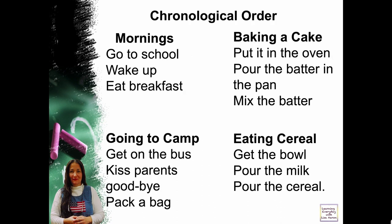Chronological order. Mornings: go to school, wake up, eat breakfast — do you see it's not in order? If you were to put your paragraph starting with going to school and then waking up, it would confuse the reader. Chronological order needs to make sense. Baking a cake: put it in the oven, pour the batter in the pan, mix the batter — you see how that's not the order of making a cake? You need to put things in chronological order so the reader can follow along easily and understand what you're writing about.